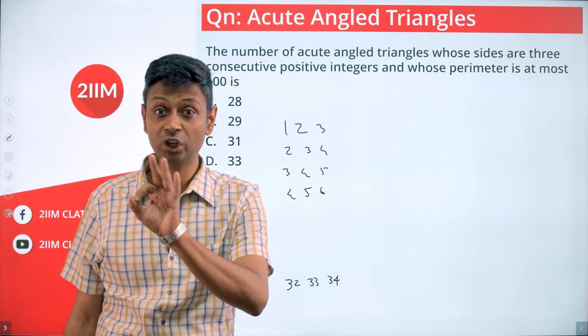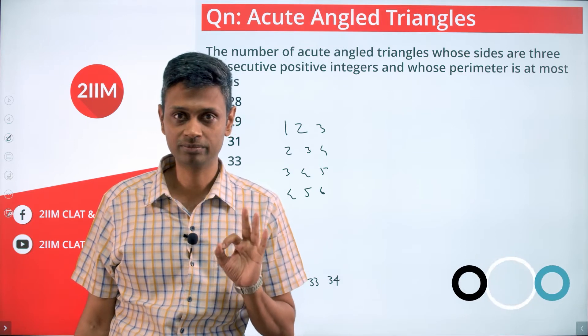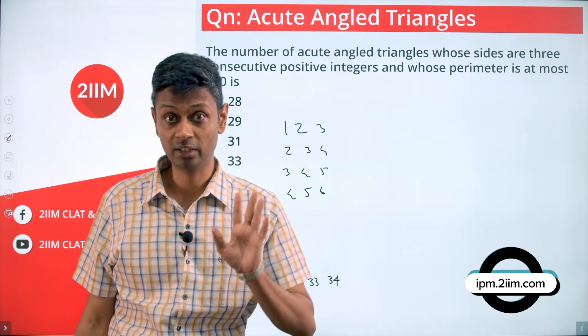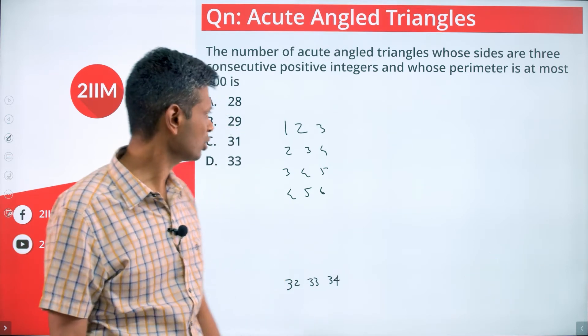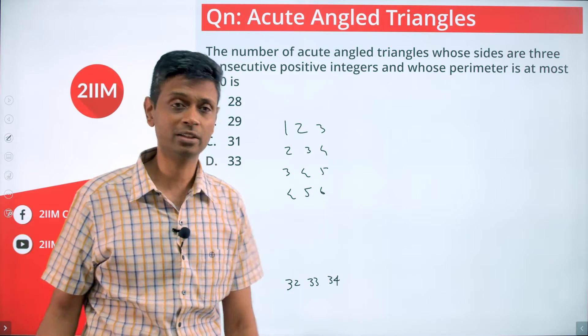We have not come to the triangle angle, we have definitely not come to the acute angle triangle. Let's look at the triangle thing. For a triangle, sum of any two sides should be greater than the third one. This is out.